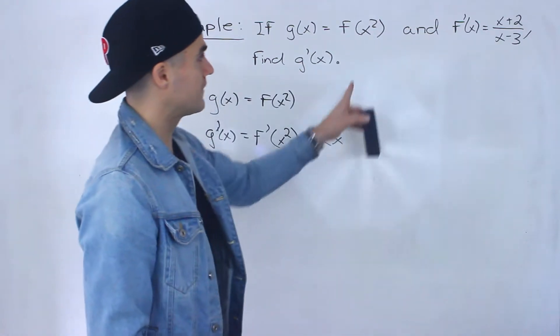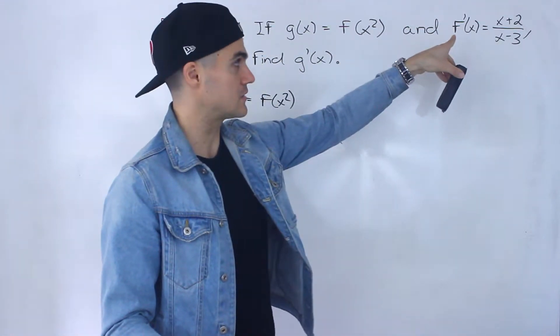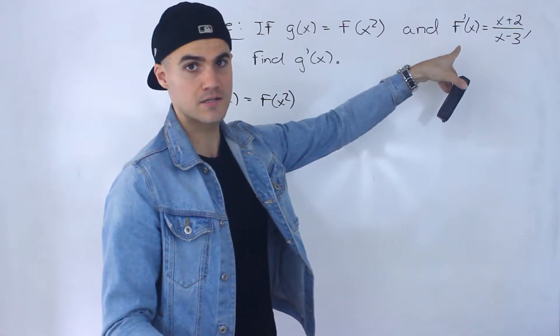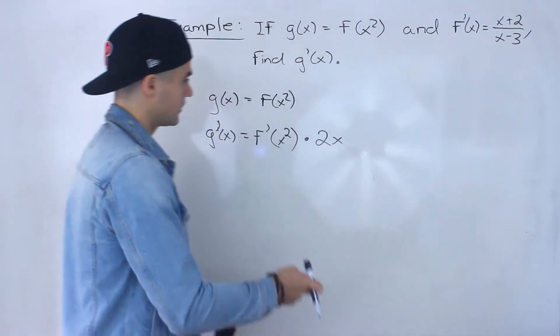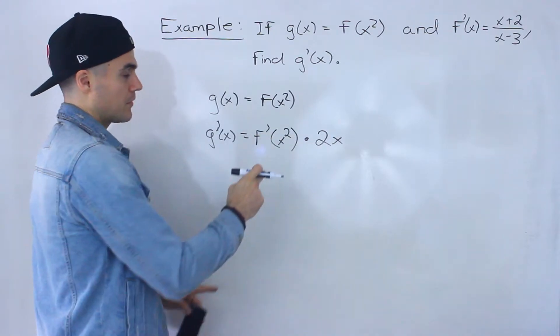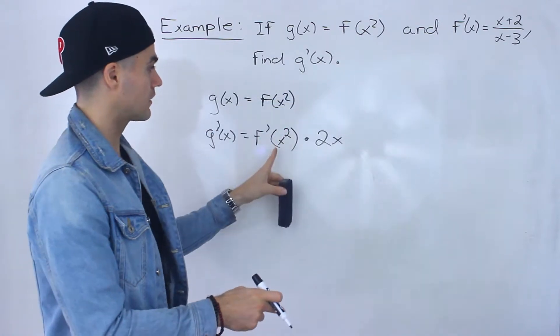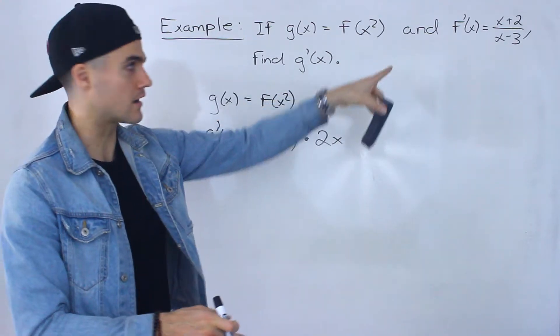Now we're told that the derivative of f of x, f prime of x, is equal to x plus 2 over x minus 3. We're given that. But notice here we got f prime of x squared. But if we know f prime of x equals x plus 2 over x minus 3, all we got to do for this is plug in the x squared for the x's there.